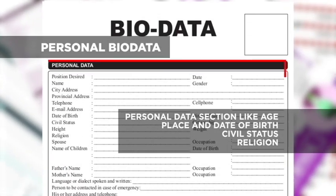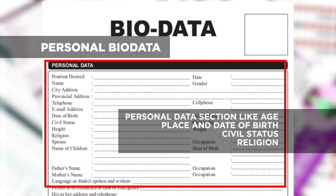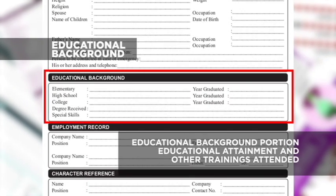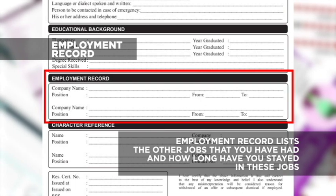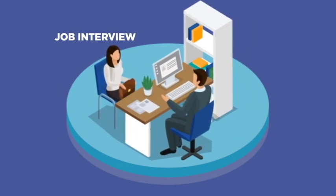The bio data or resume basically contains four parts. The personal data section gives your personal background, like age, place and date of birth, civil status, religion, etc. This will give the employer your profile. The educational background portion gives your educational attainment and other trainings attended, giving the employer an overview of what you can do given your education and training. The employment record lists the other jobs that you have had and how long you stayed. Sometimes you are also asked why you left your previous job. This may give the employer an idea of how well you can do the job.